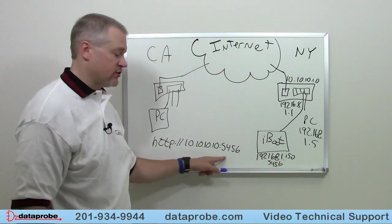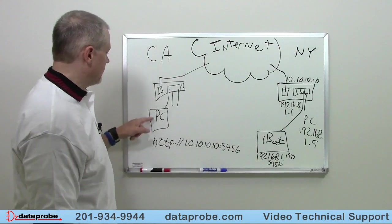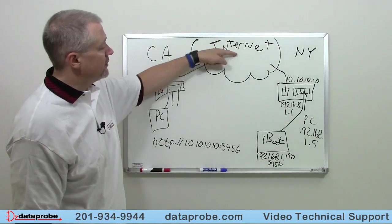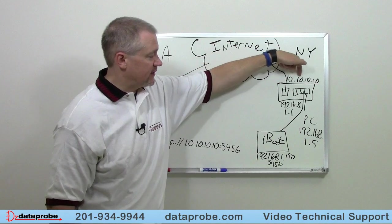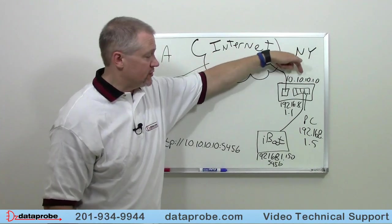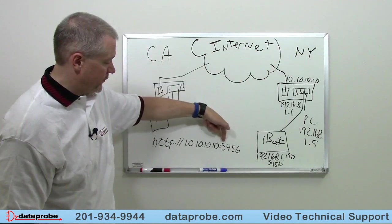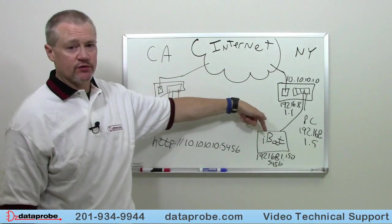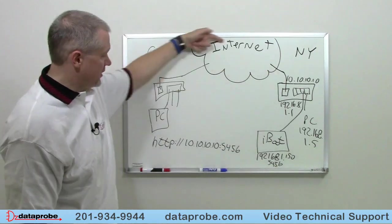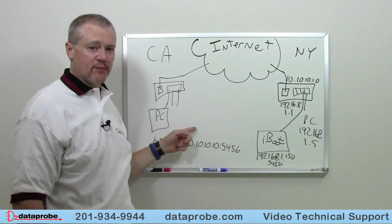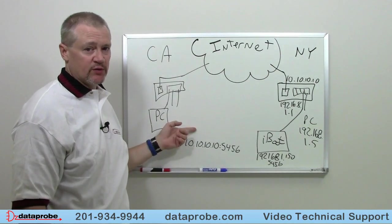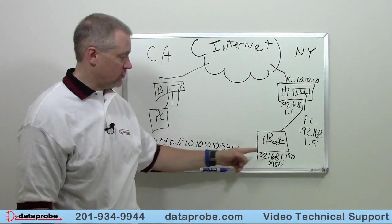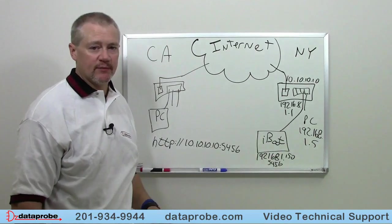Once you enter the IP address into your computer in California, it will request through your router to the internet for the public IP address of 10.10.10.10. Once your router sees that request for port 5456, it will tell the iBoot, hey, something's asking for your username password. It will then send to your browser a username password request. You enter in your username password and you are now logged on to the iBoot and control whatever power is plugged into the iBoot.